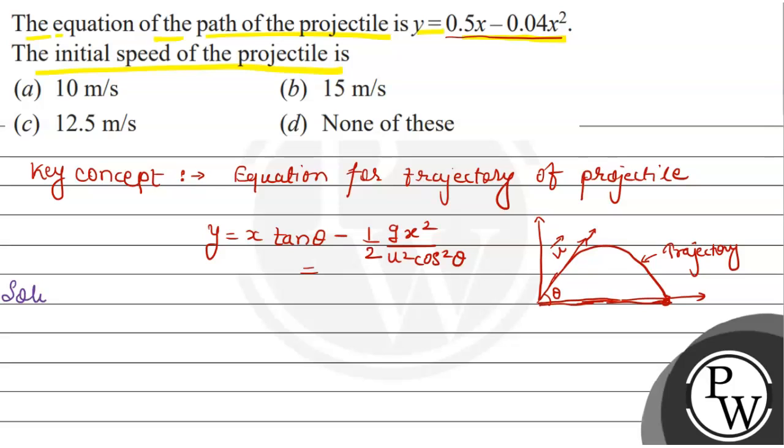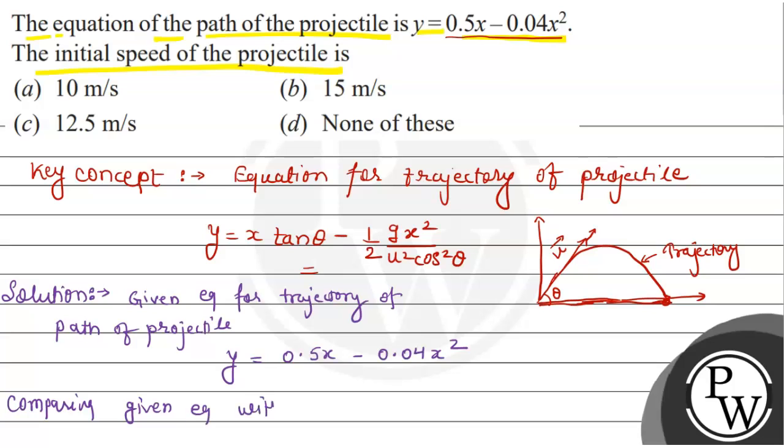In the solution, first we write: given equation for trajectory or path of projectile, that is y equals 0.5x minus 0.04x square. So comparing given equation with the standard equation, that is equation 1, we have...